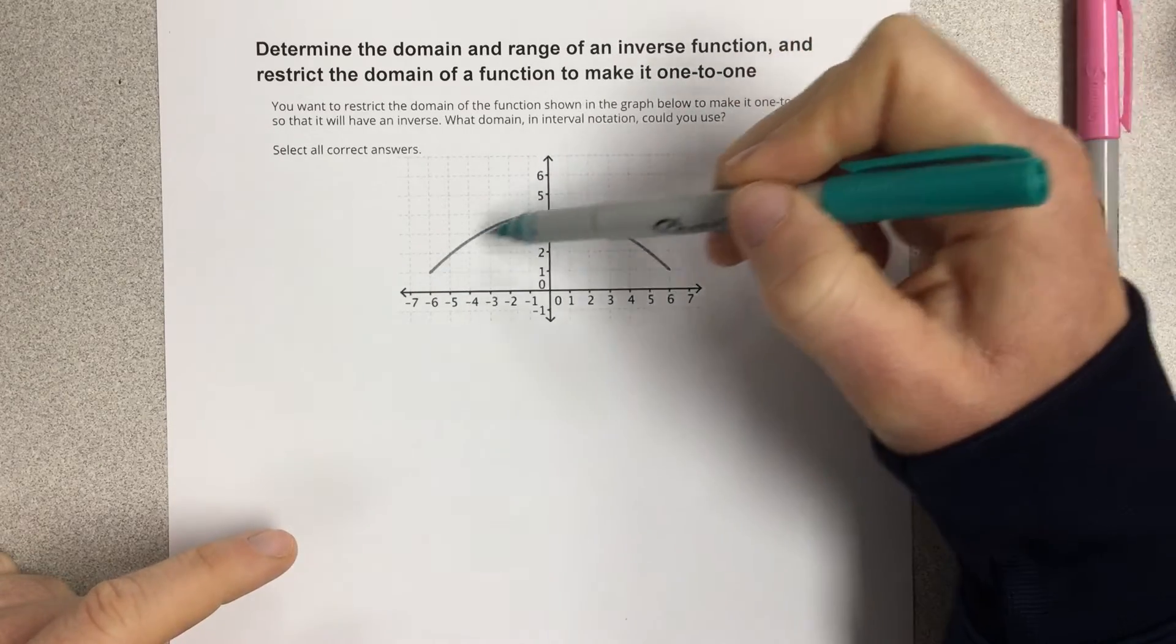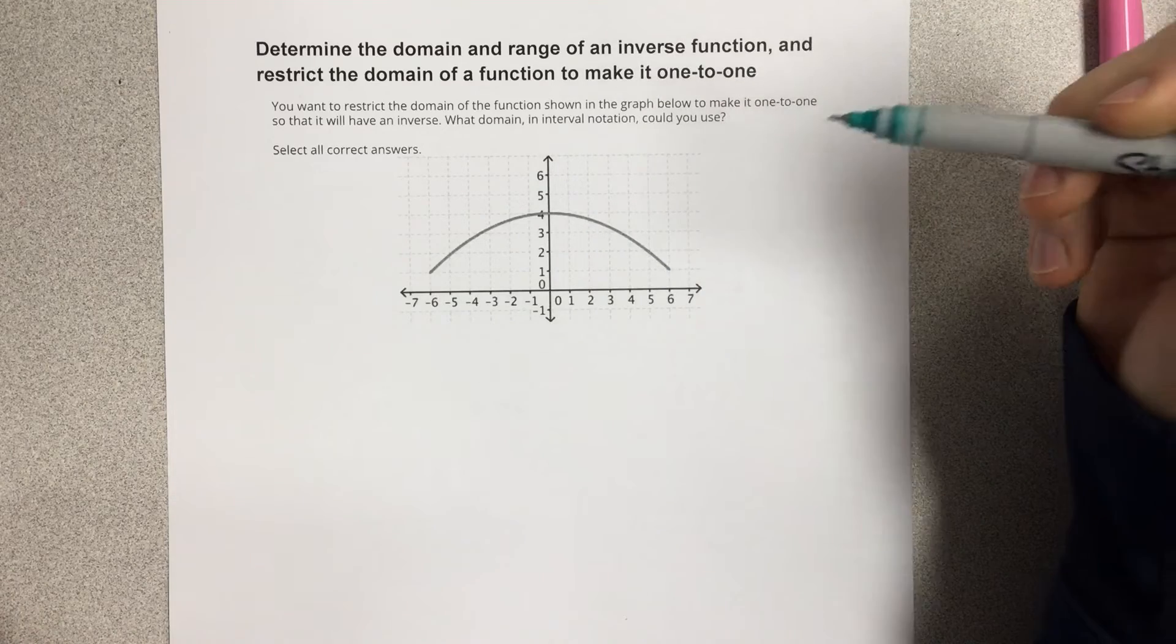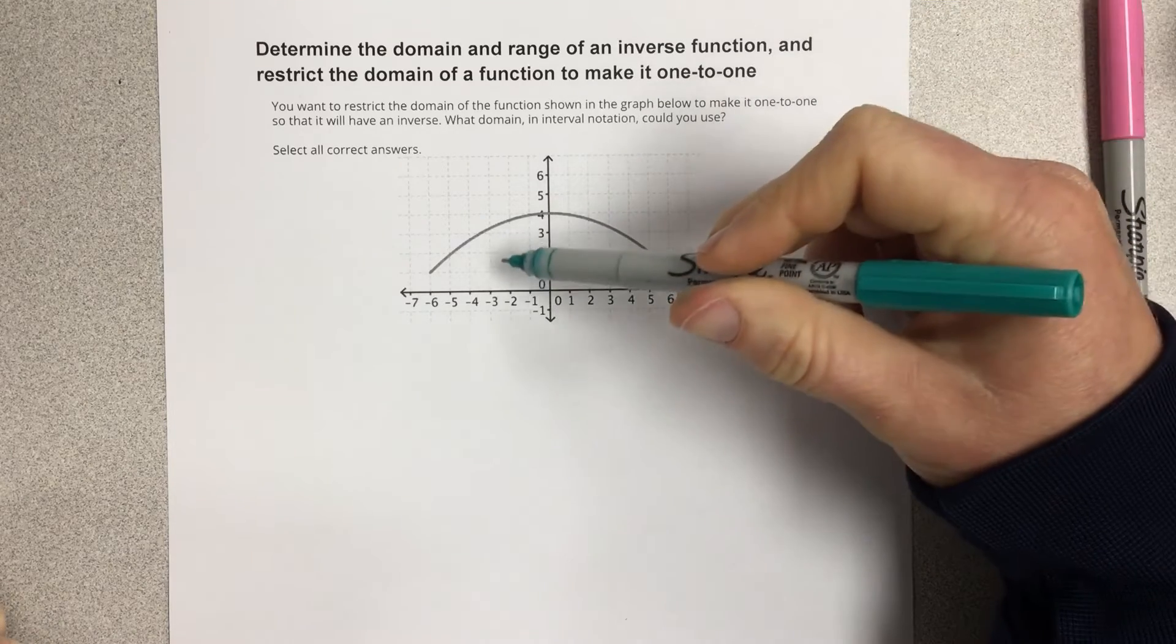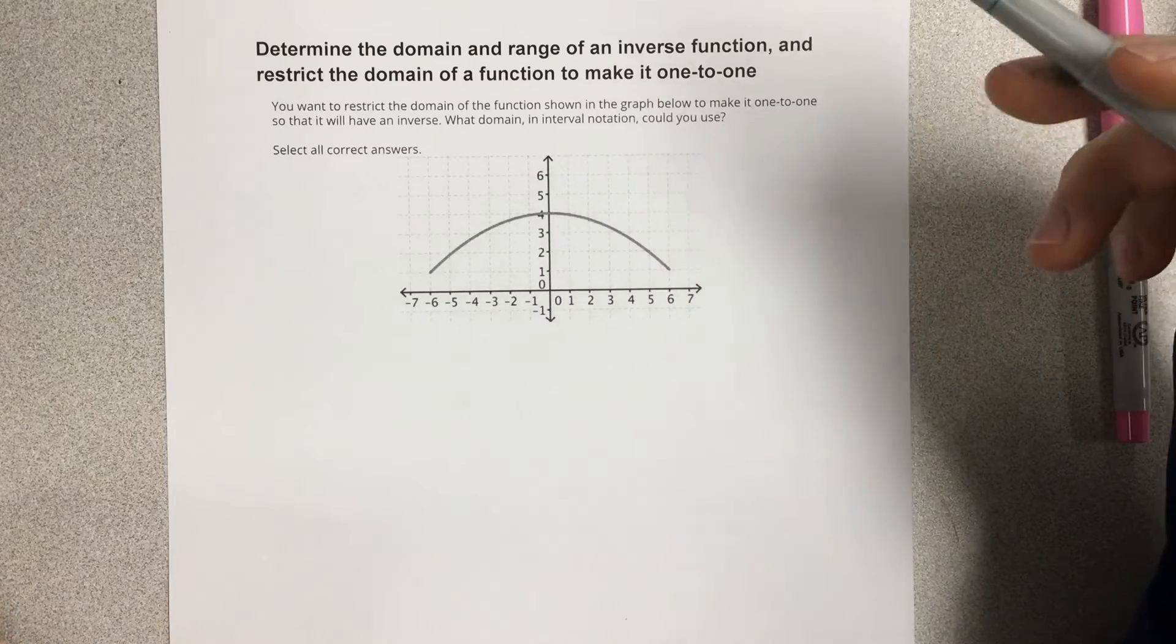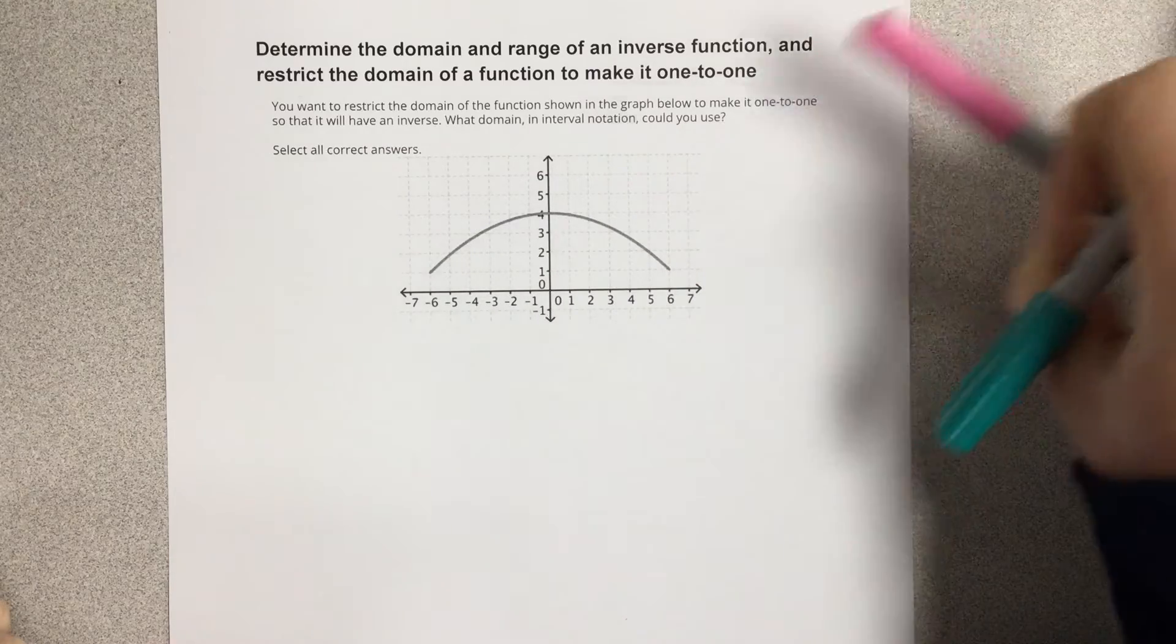This function looks like a parabola, and it does not have an inverse because it doesn't pass the horizontal line test to make it one-to-one. You have to be one-to-one in order to have an inverse.